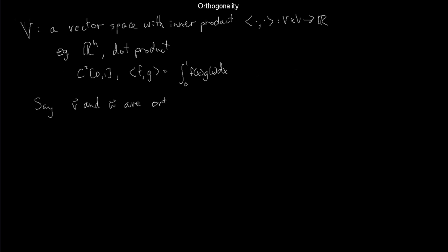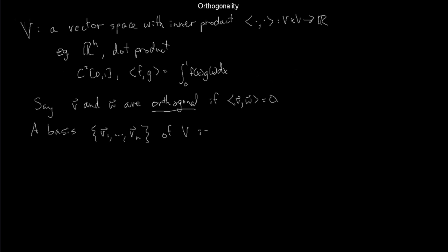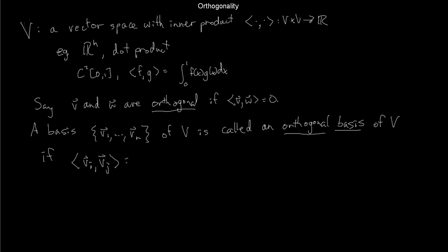Recalling from calculus class: two vectors in any inner product space are orthogonal if their dot product is 0. You know this from Euclidean space, say R³, and I'm just going to define it in a general inner product space to be the same thing. Suppose I had a basis V1 through Vn of V — so V is n-dimensional. I'll call that an orthogonal basis of V if the vectors making it up are mutually orthogonal.